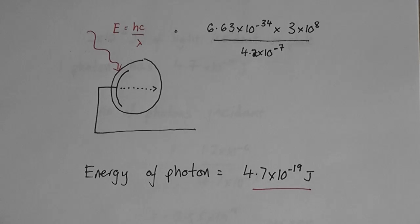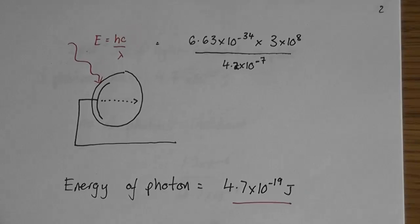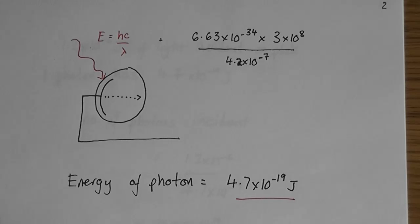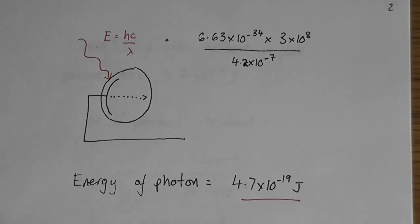First thing I do is work out the energy of one photon, and I can do that with the formula E equals HC over lambda. That will give you the energy of one photon of 4.7 times 10 to the minus 19 joules.